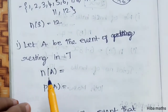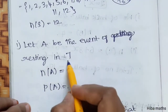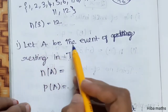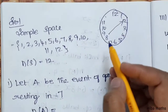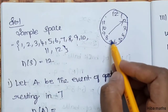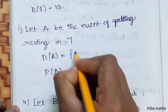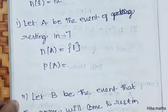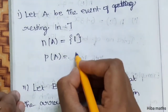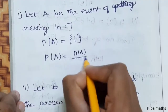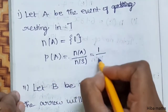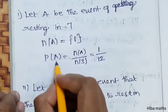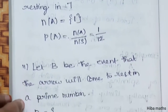First question: what is the probability of landing or resting on 7? Let A be the event of resting on 7. There is only one possibility for 7, so n of A equals 1. P of A equals n of A divided by n of S, which is 1 by 12. So, P of A equals 1/12.